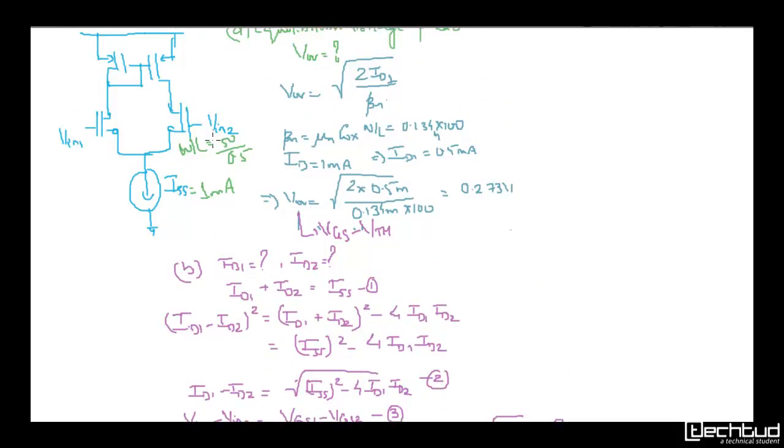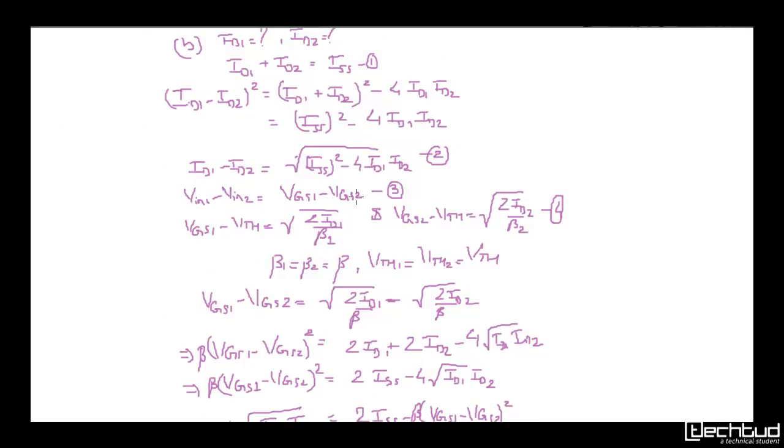Now VIN1 - VIN2 is the same as VGS1 - VGS2 because the source potentials cancel. We assume the threshold voltages of both transistors are matched. In that condition, VGS1 - VTH = sqrt(2*ID1/β) and VGS2 - VTH = sqrt(2*ID2/β). Since the W/L ratios are the same, β1 = β2, so we can substitute back into the equation.